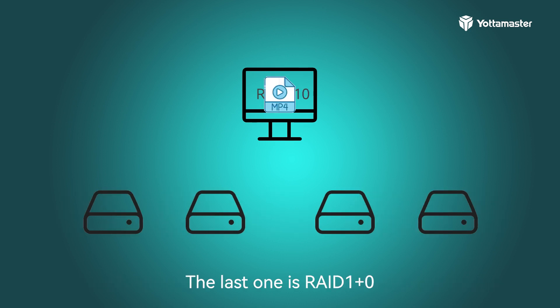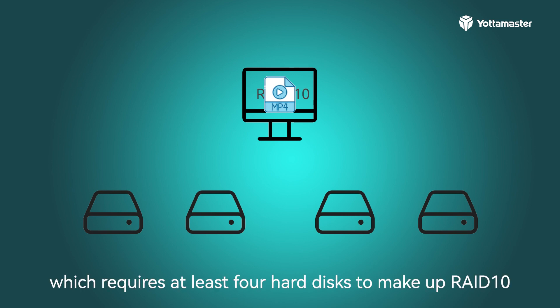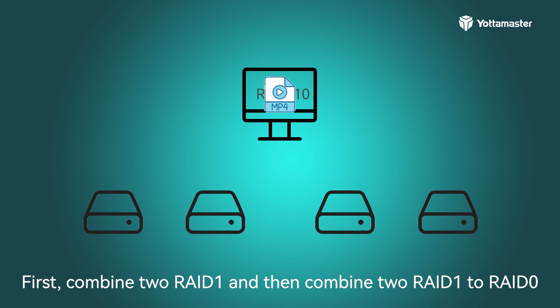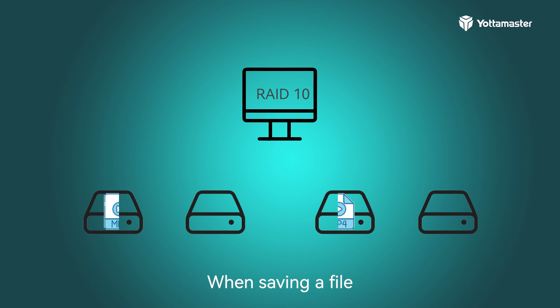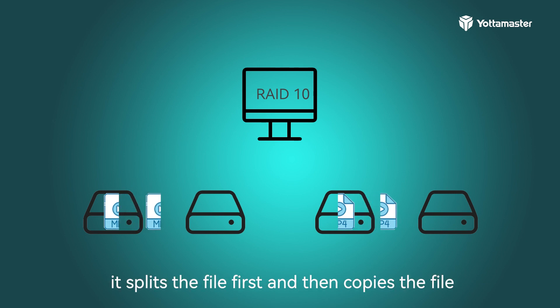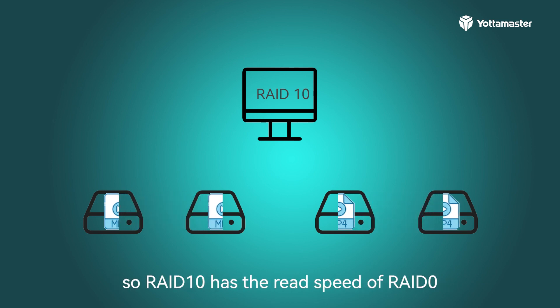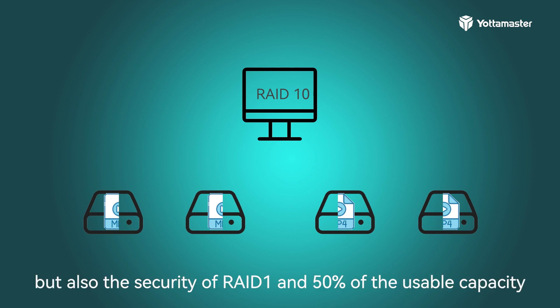The last configuration is RAID 1+0, also known as RAID 10, which requires at least four hard disks. First, combine two pairs of drives into two RAID 1 arrays, and then combine those two RAID 1 arrays into a RAID 0. When saving a file, it splits the file first and then copies it. So RAID 10 has the read speed of RAID 0, the security of RAID 1, and 50% of the total disk capacity as usable storage.